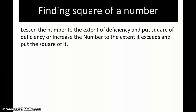Now we are going to see the technique to find the square of a number which is near to some numbers like 1000, 100, or 10000. The rule says: lessen the number to the extent of deficiency and put the square of the deficiency, or increase the number to the extent it exceeds and put the square of it.